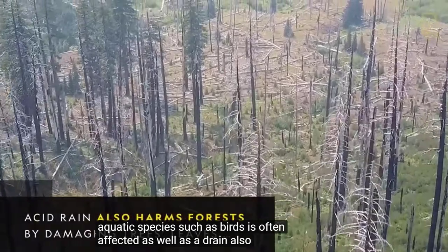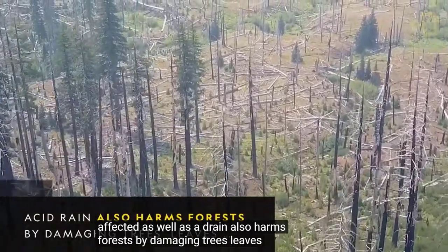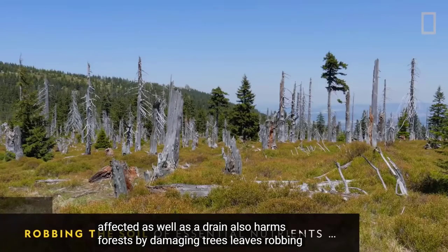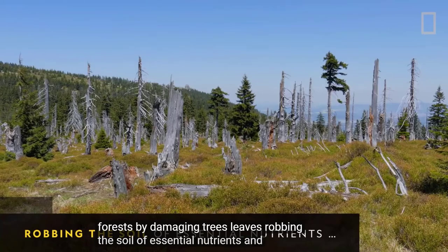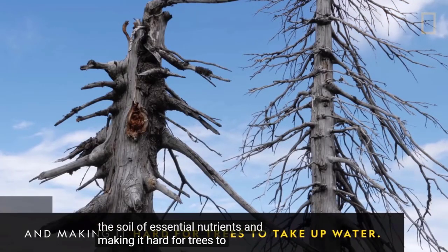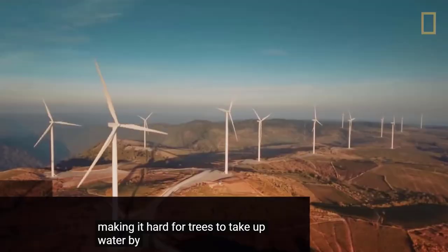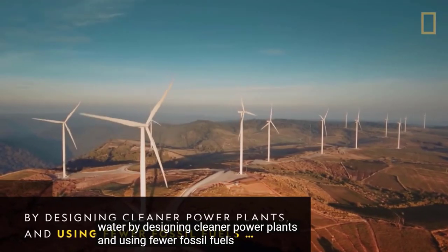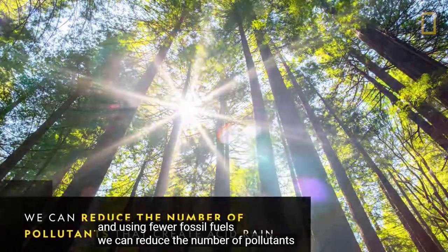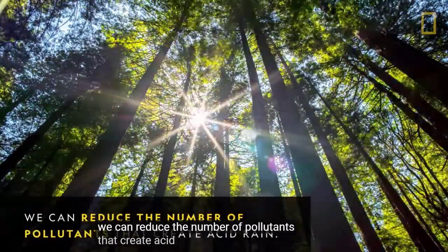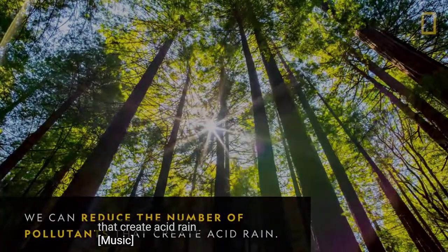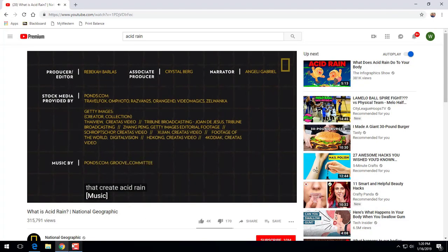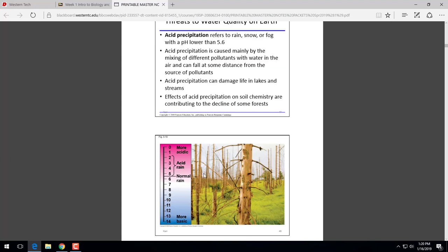Acid rain also harms forests by damaging trees' leaves, robbing the soil of essential nutrients, and making it hard for trees to take up water. By designing cleaner power plants and using fewer fossil fuels, we can reduce the number of pollutants that create acid rain. We're just looking at finding ways to use less fossil fuels, like wind energy, solar energy, those alternative fuel sources.